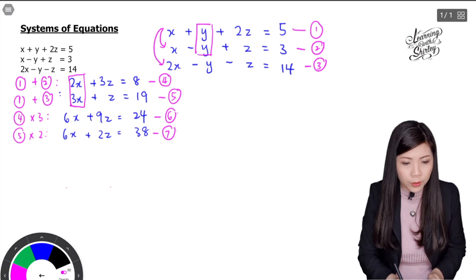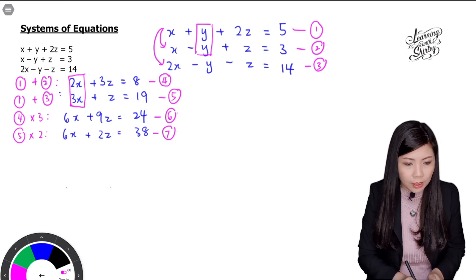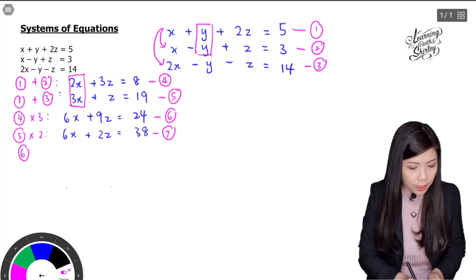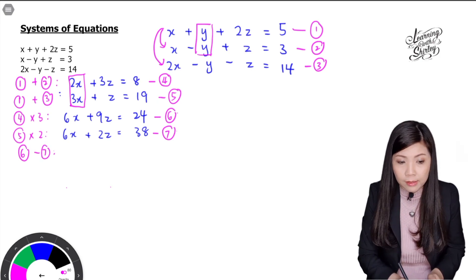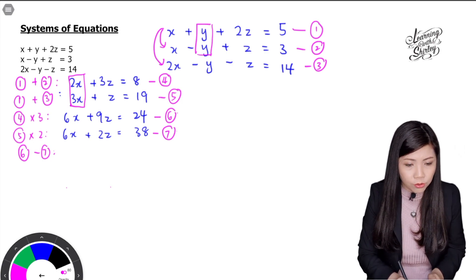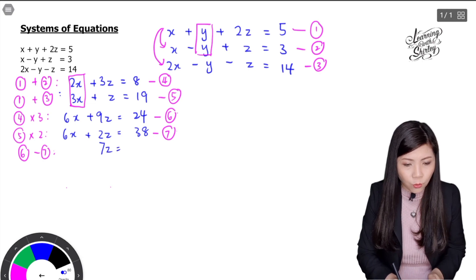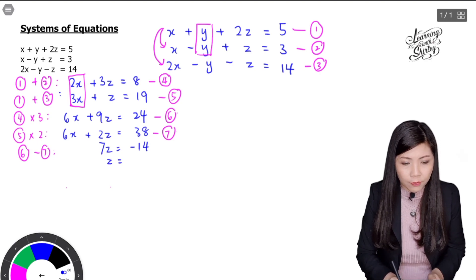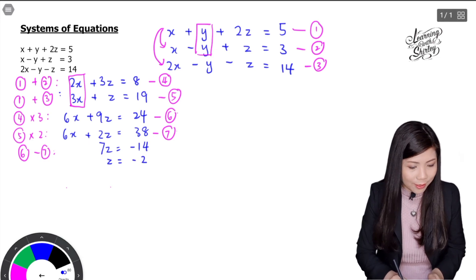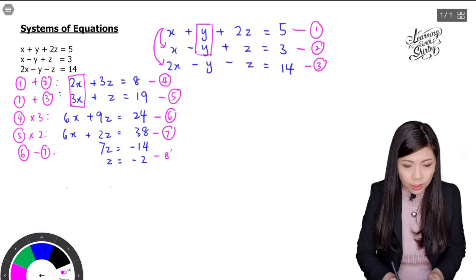Solving equation 6 minus equation 7: 6x minus 6x is 0, and 9z minus 2z is 7z, and 24 minus 38 is negative 14. So 7z equals negative 14, which means z equals negative 14 divided by 7, giving z equals negative 2. We now have the value for z, and this is equation 8.